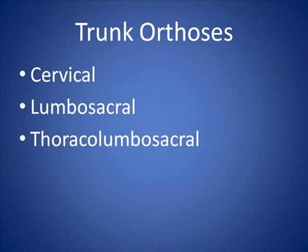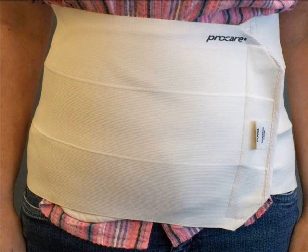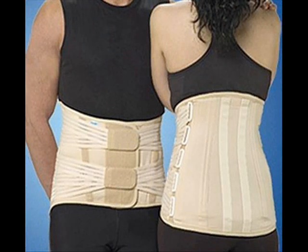Trunk orthoses are designed to control motion of the spine and provide compression of the abdomen. A simple off-the-shelf elastic back support mainly offers abdominal compression. A person with orthostatic hypotension might wear this to help promote venous return, or people with lumbar back pain might wear a binder to decrease some of the work of the low back muscles. Lumbosacral orthoses can also look more like corsets with laces and stays — rigid strips of plastic or metal sewn into the corset — which provide some control of flexion, extension, and side bending.